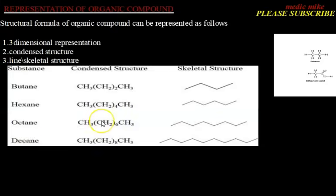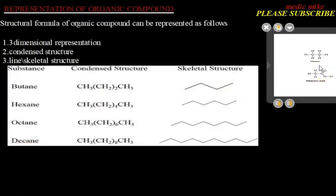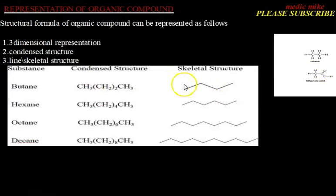Next, we are going to look at the representation of organic compounds. Organic compounds can be represented in three forms: the 3D or three-dimensional representation, the condensed structure, and the line or skeletal structure. This over here is our 3D representation, and this is our condensed structure representation.